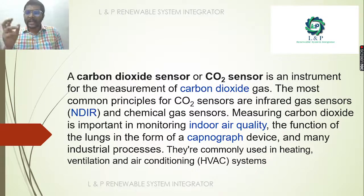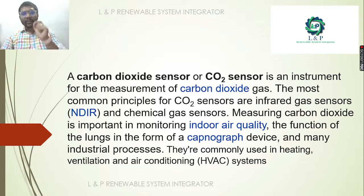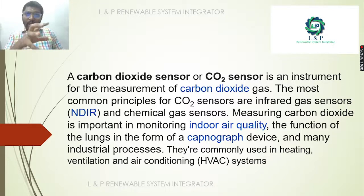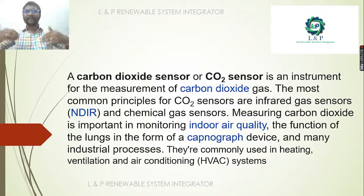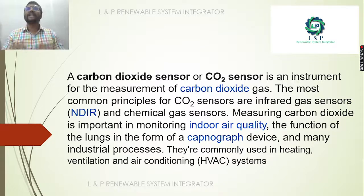Why are we using infrared as a source? Why can't we use ultraviolet? There is a difference. In the CO2 gas, CO2 molecules will be present. The CO2 molecules will absorb around 4.2 microns of infrared light. When we pass infrared light inside a CO2 gas, the CO2 molecules will absorb the infrared light around 4.0 microns. So based on this difference, if you are passing 100 microns, only 60% you will get as an output — 40 to 42 microns will be absorbed by the CO2 molecules which are present. Based on this principle, the CO2 sensor is working.